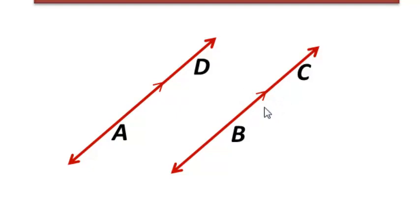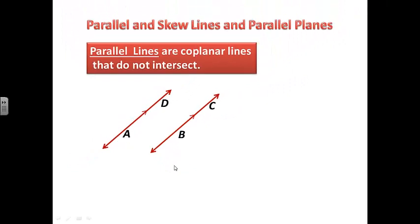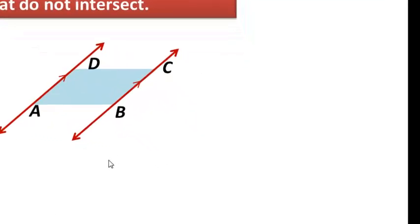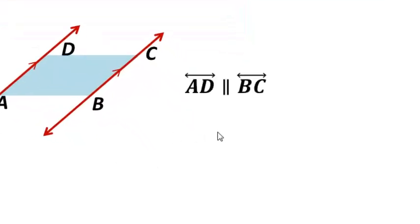This arrow symbolizes that these lines are parallel, and it has to have the same number of arrows. We have one arrow here and one arrow here. That means these two lines are parallel to each other, and I've drawn in a plane to show that these are clearly coplanar lines. We would write it: line AD is parallel to line BC. Take note of this symbol — it just means that these lines are parallel.